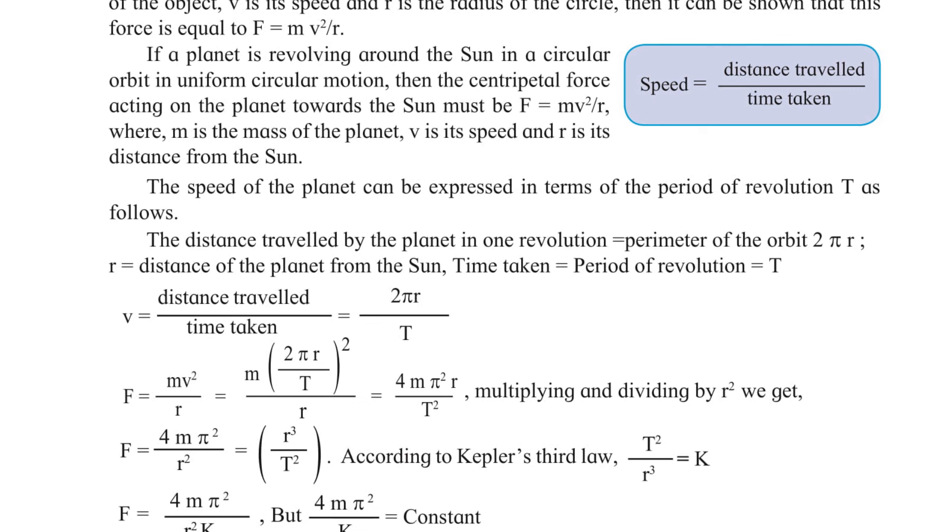The speed of the planet can be expressed in terms of the period of revolution T. The distance traveled by the planet in one revolution equals the perimeter of the orbit, which is 2πr. r is the distance of the planet from the sun. Time taken equals period of revolution equals T.